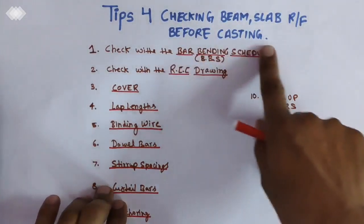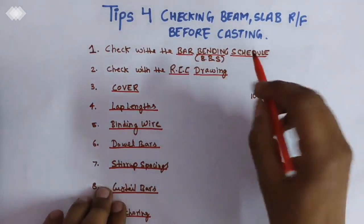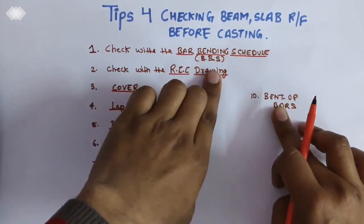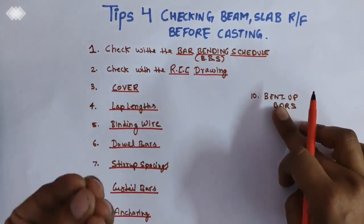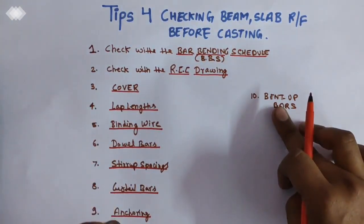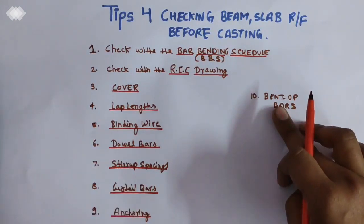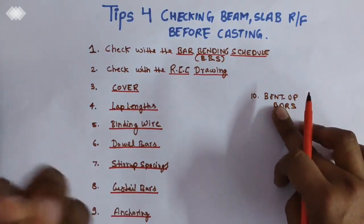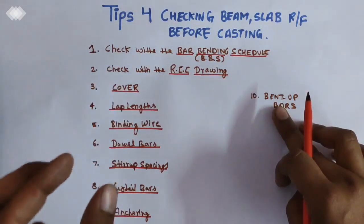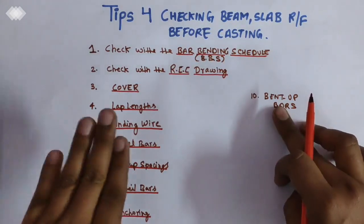Tips for checking beam and slab reinforcement before casting. First one: check with the Bar Bending Schedule, that is the BBS. In the BBS we will get the number of steel bars, the diameter of the bars, and the cutting length, total weight of the steel bars and their cost value, and where you have to apply the required number of ring bars.